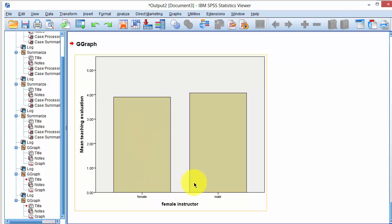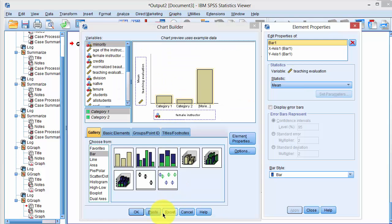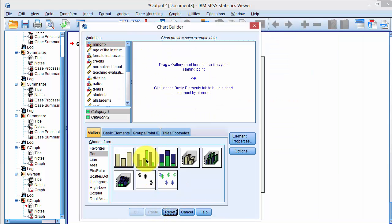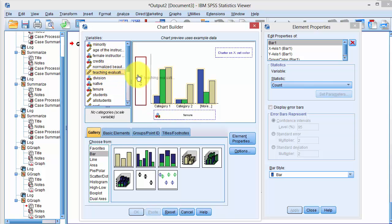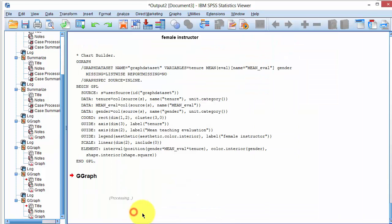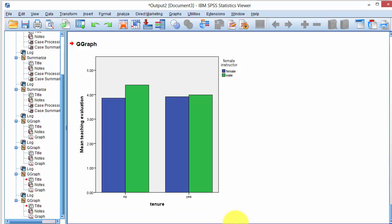Now we want to do the same for tenure but adding gender as an additional dimension. I say graphs, chart builder, reset. This time I pick a different template, click on x-axis, we pick tenure, and teaching evaluation on count, drag and drop, and then female on the clustering on x, and then OK, and there you go.